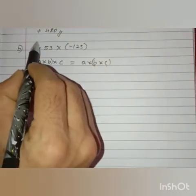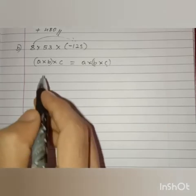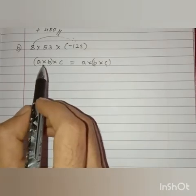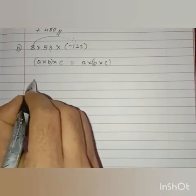So, let us multiply 8 and minus 125 first. Then, we can multiply the product with the 53.